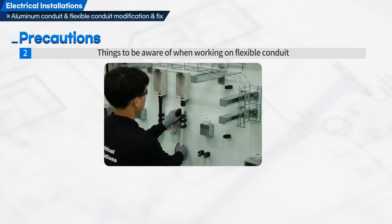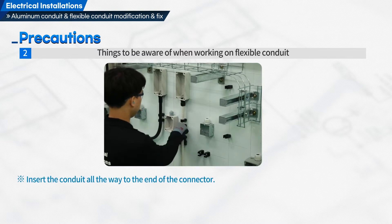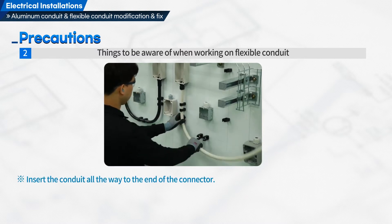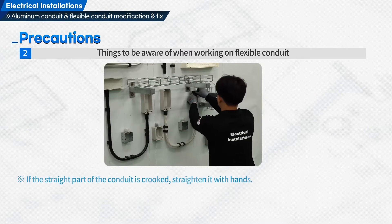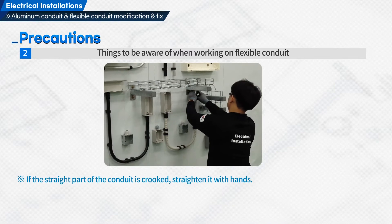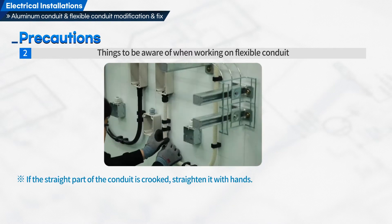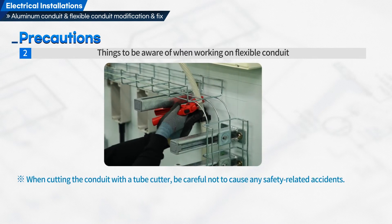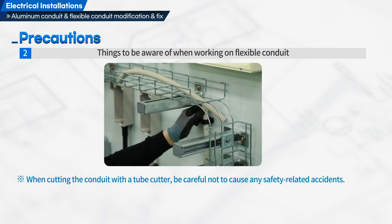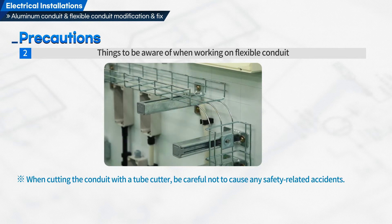Here are things to be aware of when working on flexible conduit. First, insert the conduit all the way to the end of the connector. Second, if the straight part of the conduit is crooked, straighten it with your hands. Third, when cutting the conduit with a tube cutter, be careful not to cause any safety-related accidents.